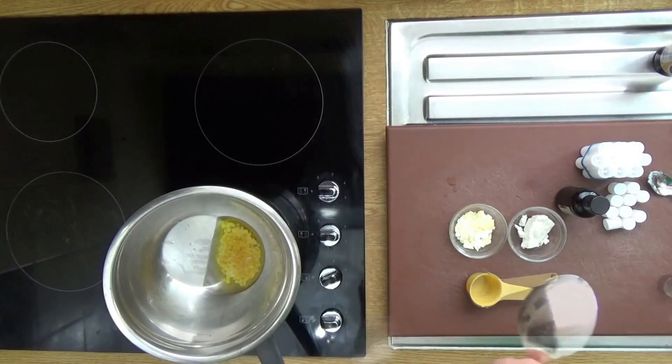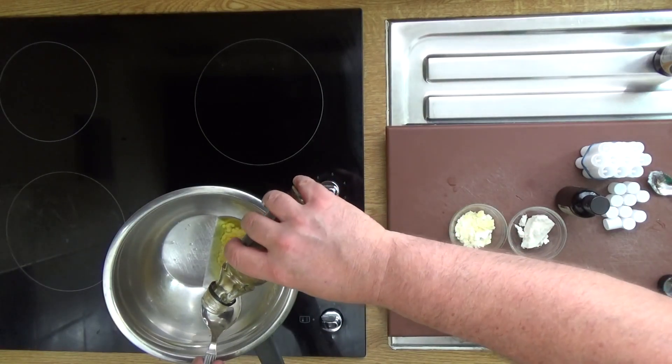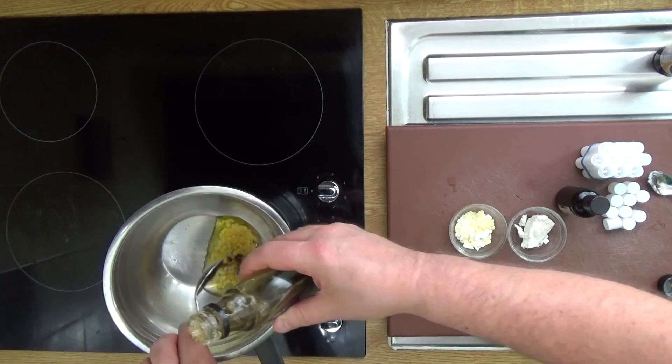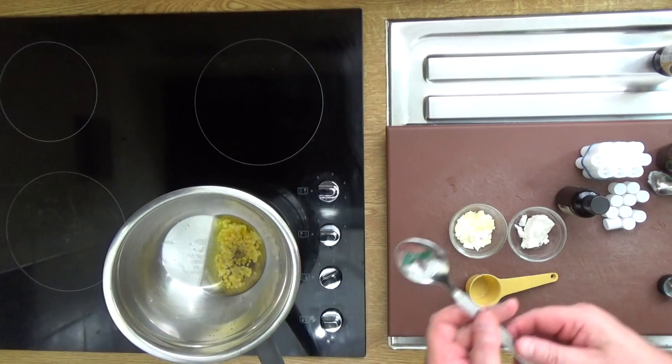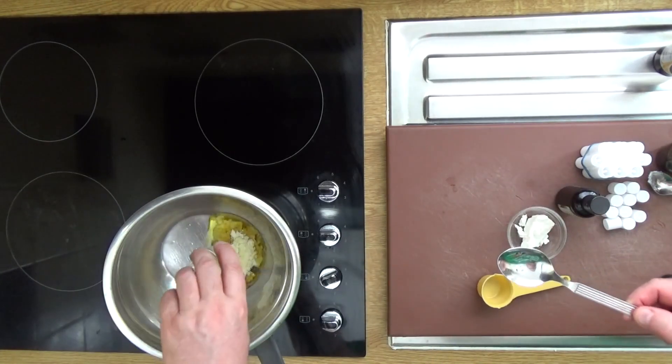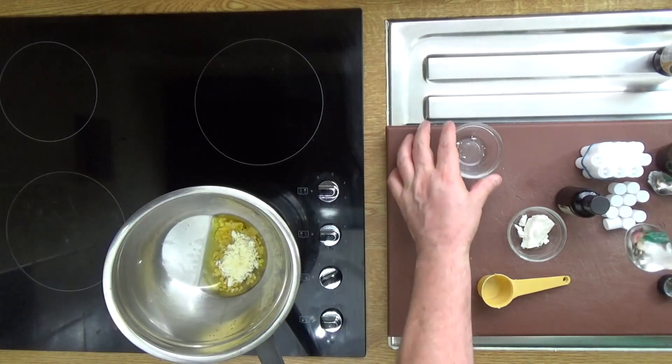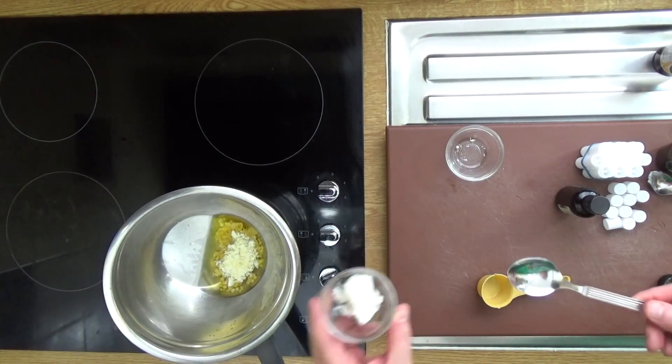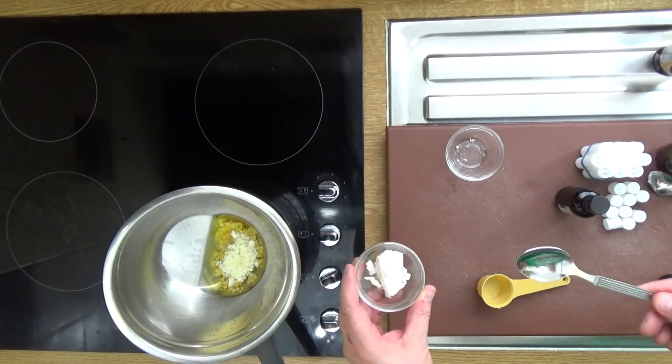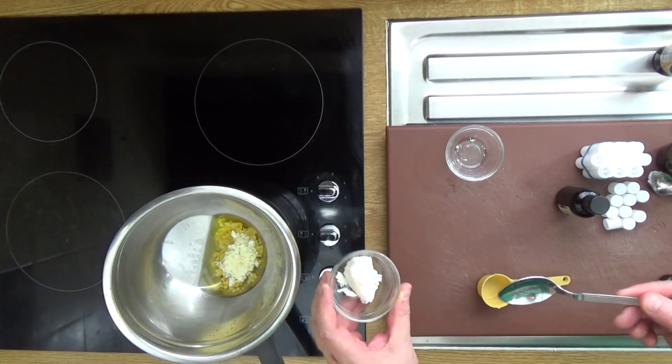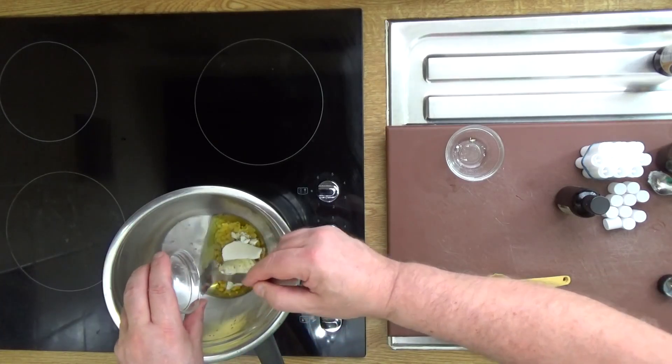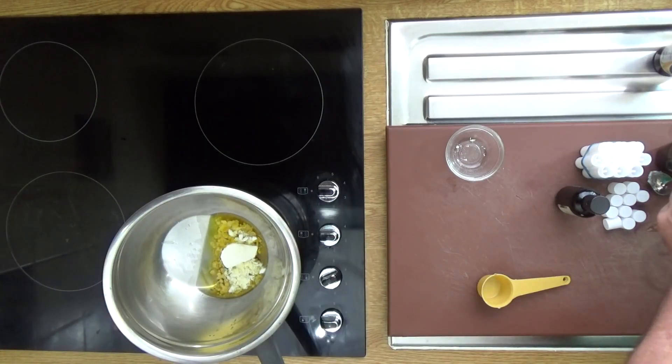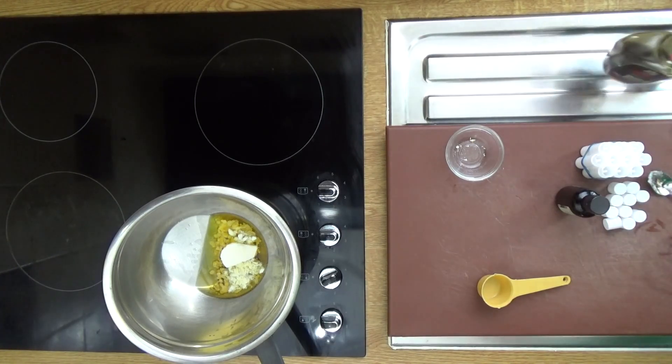And into there goes a tablespoon of maple syrup. Now our next ingredient is about the same of shea butter. Shea butter, the recipe will be in the description below. And what gives this a lovely sort of chocolatey taste as well as the sweetness of the maple syrup is cocoa butter. It adds a wonderful chocolatey taste to this and then that all goes in.